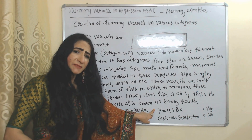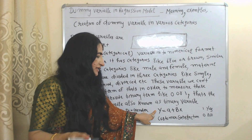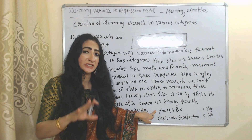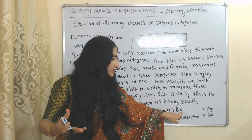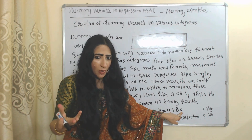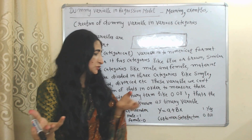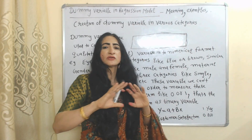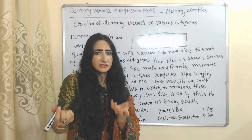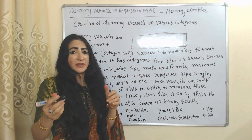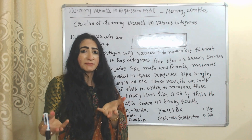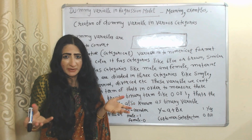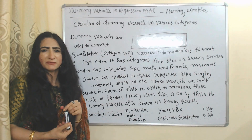Here our dependent variable is a dummy. The example is consumer satisfaction — you cannot measure consumer satisfaction in terms of numbers. It depends on quality. If the consumer is satisfied, we will write one; if the consumer is not satisfied, we will provide zero. So here you can see we provide a binary term in order to measure a qualitative variable, and this is called a dummy variable.